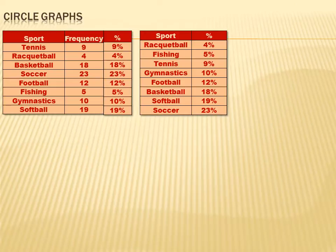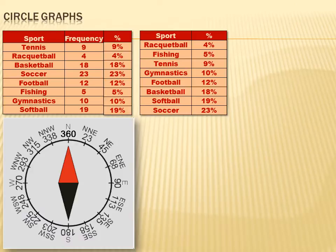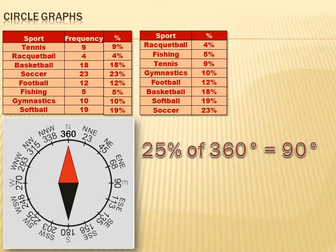Now we're going to create our pie chart or circle graph. A compass has 360 degrees. If you start at north and move all the way around to east, you've gone 90 degrees — one quarter of the way around the compass. One quarter of 360 degrees, or 25% of 360 degrees, is 90 degrees. So if I shaded in that quarter, it would look like 25% of the entire circle was shaded in, and it would be.